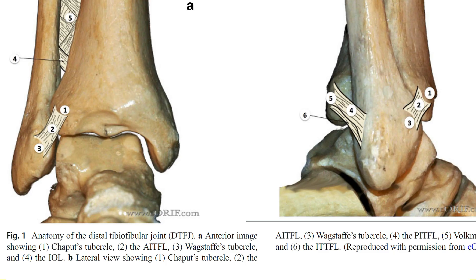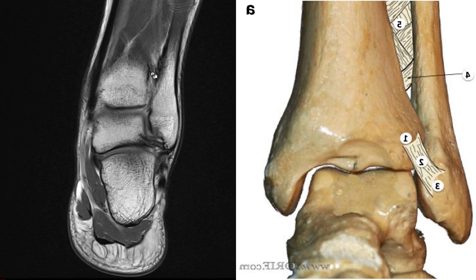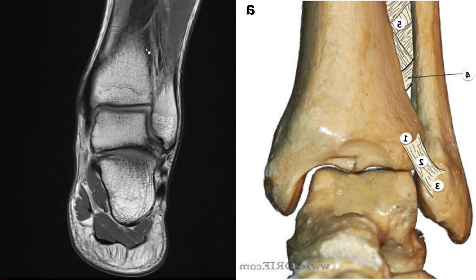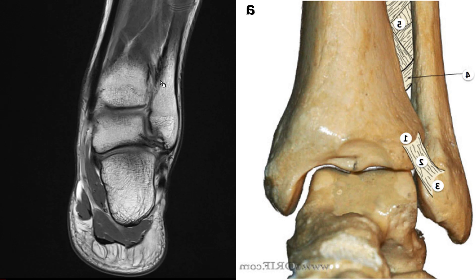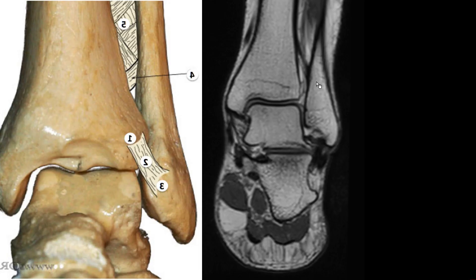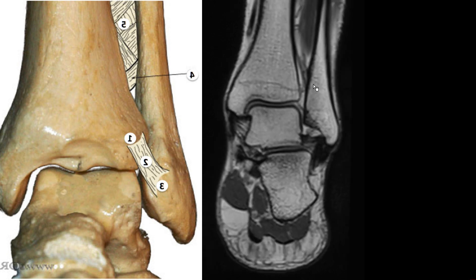Remember the diagram where the interosseous ligament runs from the fibula to the tibia from proximal to distal — now look at a real patient where the ligament is actually running from the tibia to the fibula in a proximal-to-distal orientation. In another patient you can see it even more clearly: the interosseous tibiofibular ligament is the lowest, most inferior part of the interosseous membrane, and everything above is the interosseous membrane.